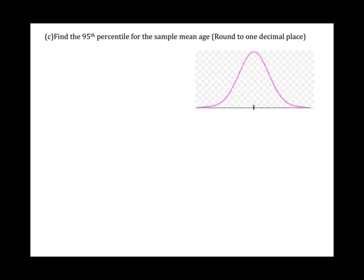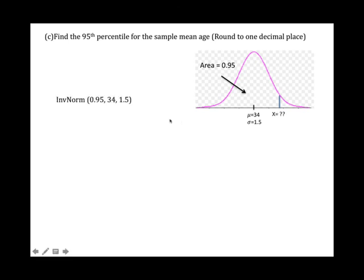Part C: Find the 95th percentile for the sample mean age. The 95th percentile means the area to the left is 0.95. They give the area and want you to find x. Use the inverse norm: area to the left, the mean, and the standard deviation. You should get 36.5.